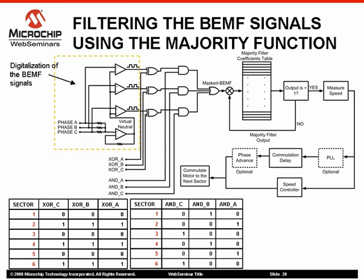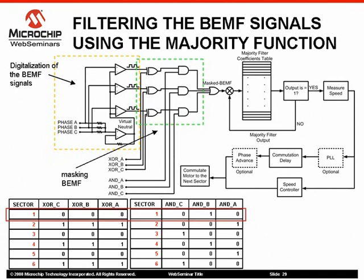An AND operator is used for detecting the active back EMF signal corresponding to the existing commutation state, and an exclusive OR operator is used to detect the falling or rising edges on the active back EMF signal. The values of the XOR and the AND mask depend on the number of the six-step commutation sector, as shown in the table.